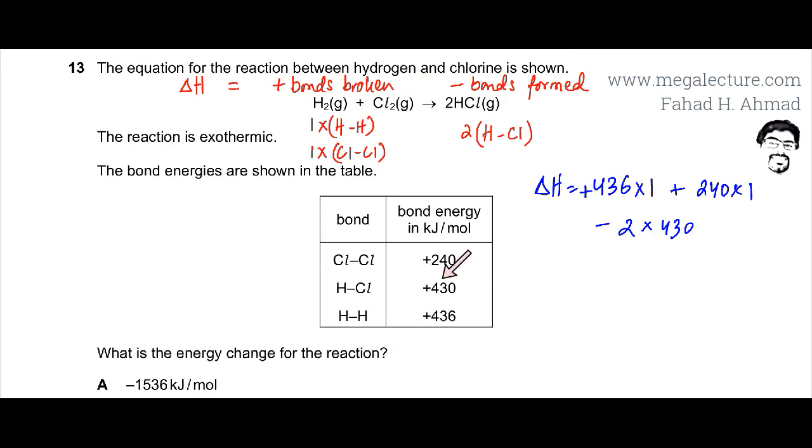One H-H bond broken - that's 436 times 1, and it's positive since bond breaking is positive. One Cl-Cl bond broken - that's 240 times 1. Again, it's positive.